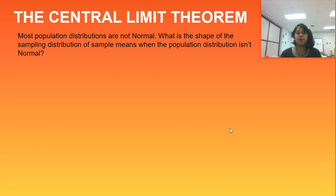So what is the shape of a sampling distribution if my population distribution isn't normal? If we're not lucky enough to have a population distribution that was originally normal, what's the shape?